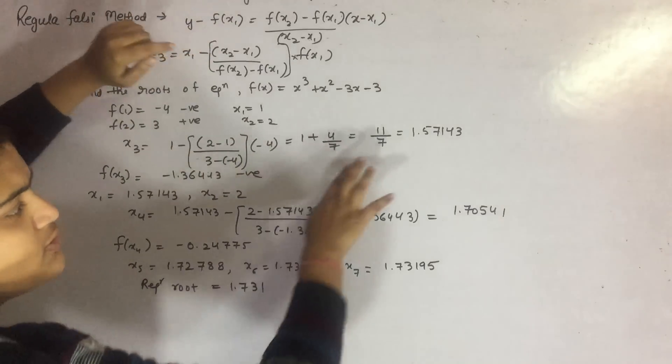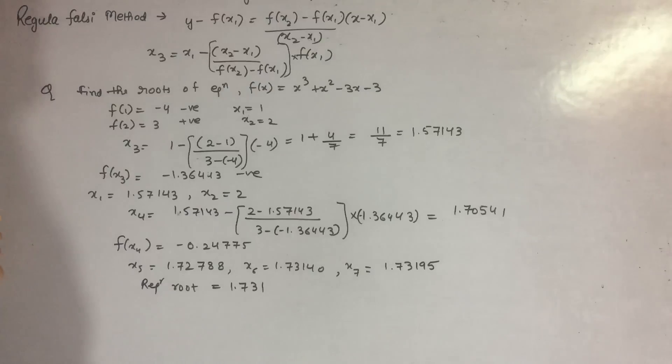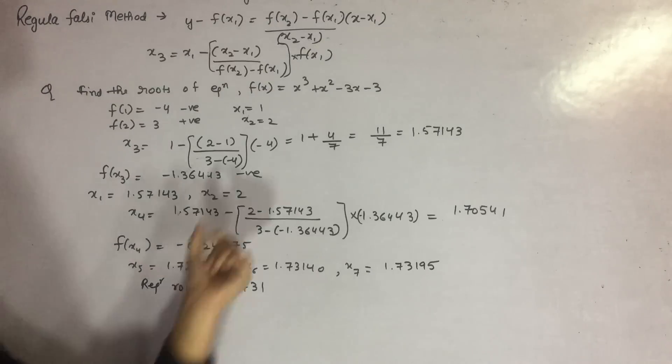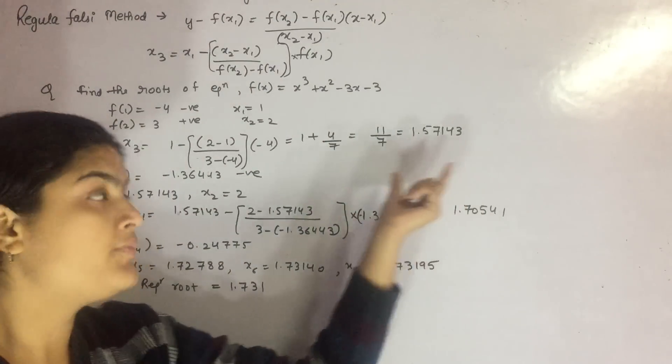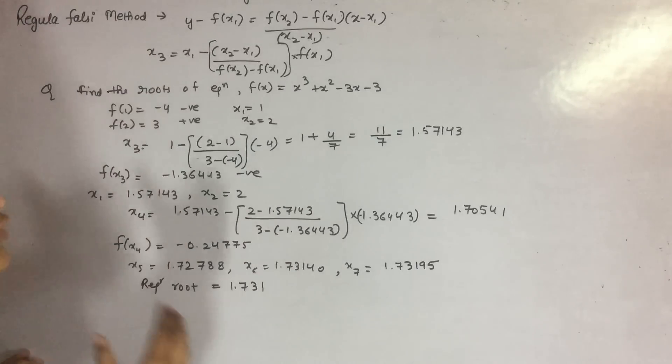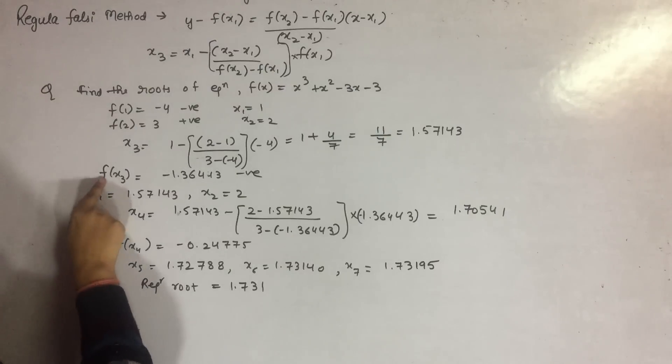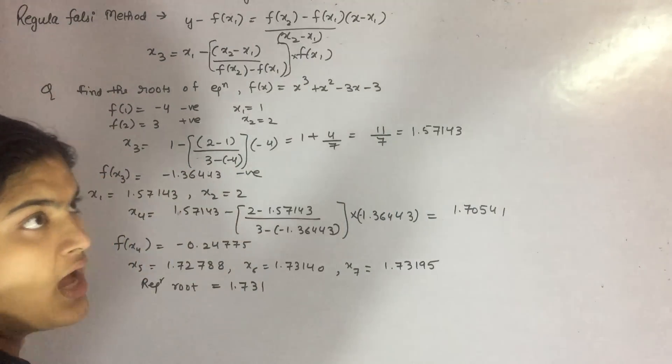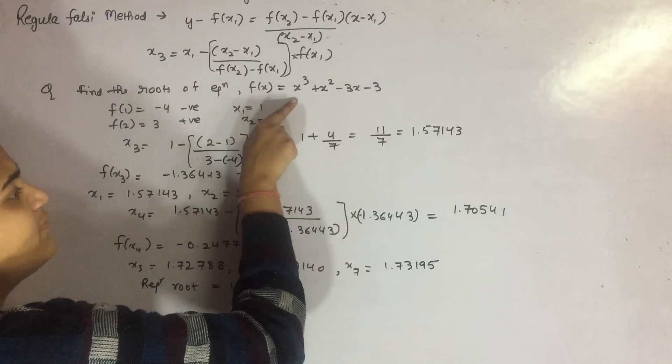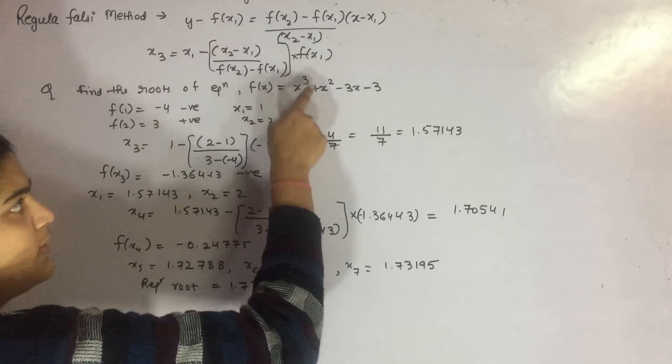When you substitute all these values, you will get 1.57143. Now this is your x3. You have to find out the value of f(x3) and check what is the sign of that value. f(1.57143) means 1.57143 cubed plus 1.57143 squared...